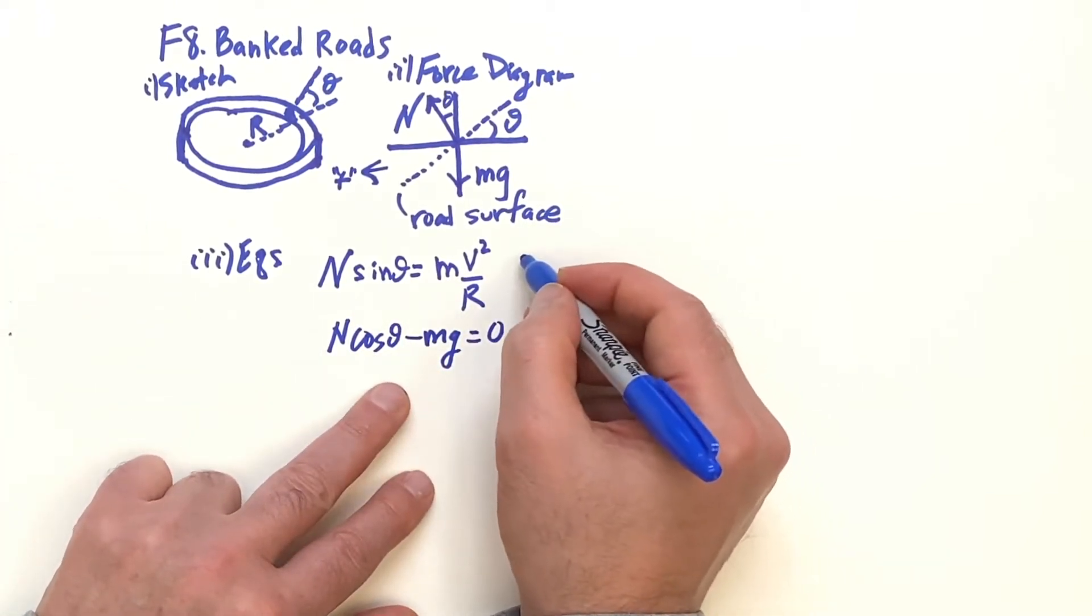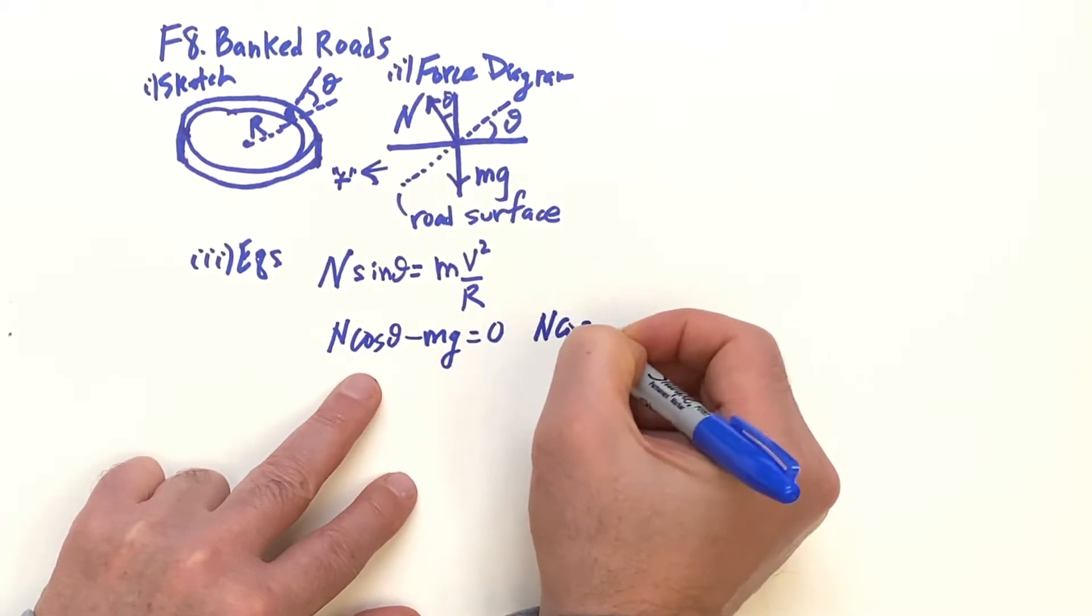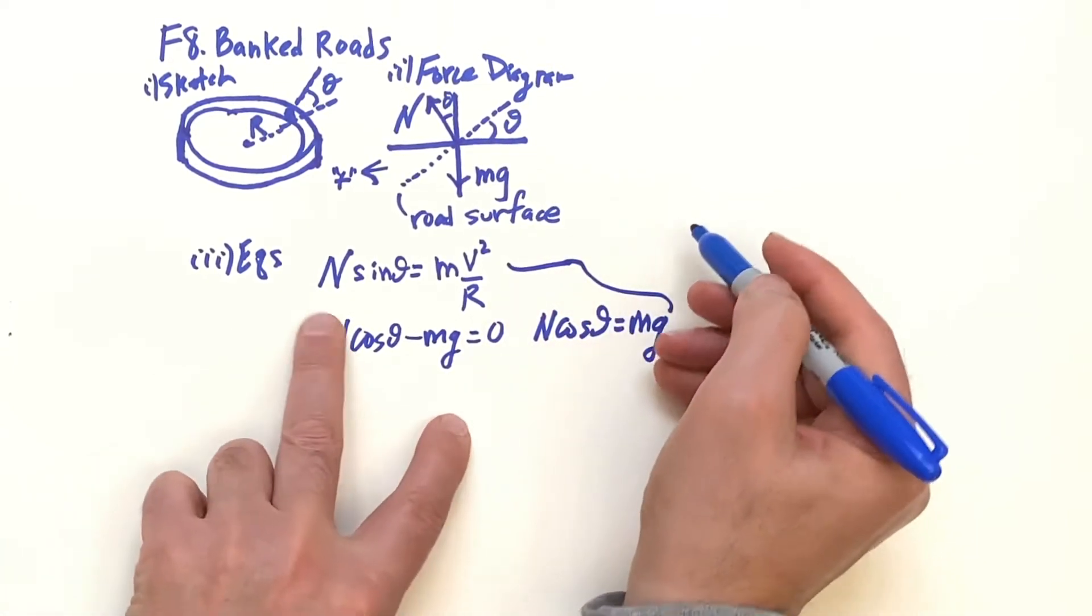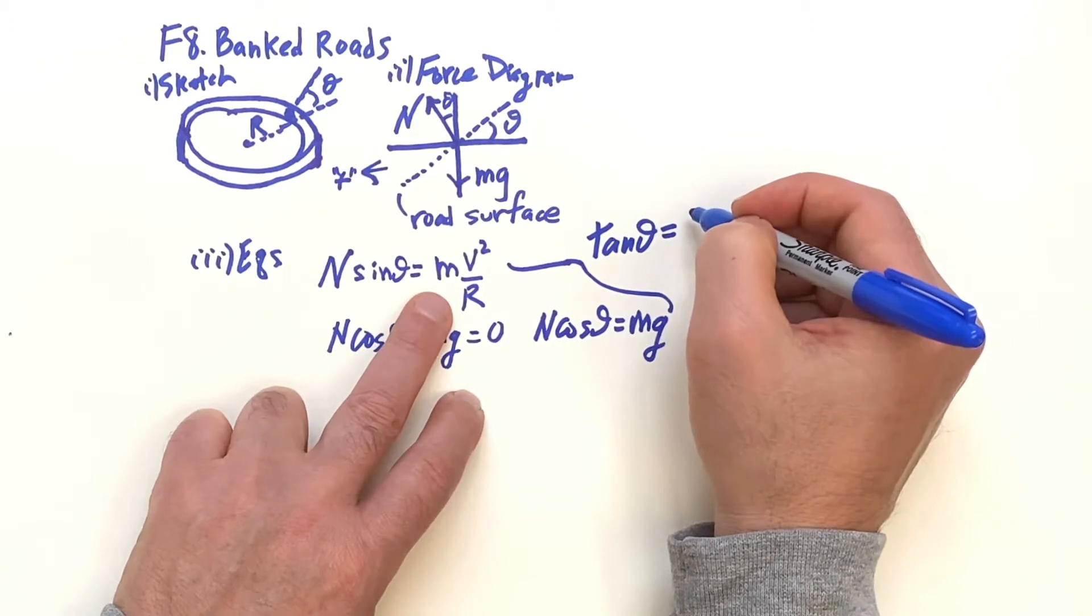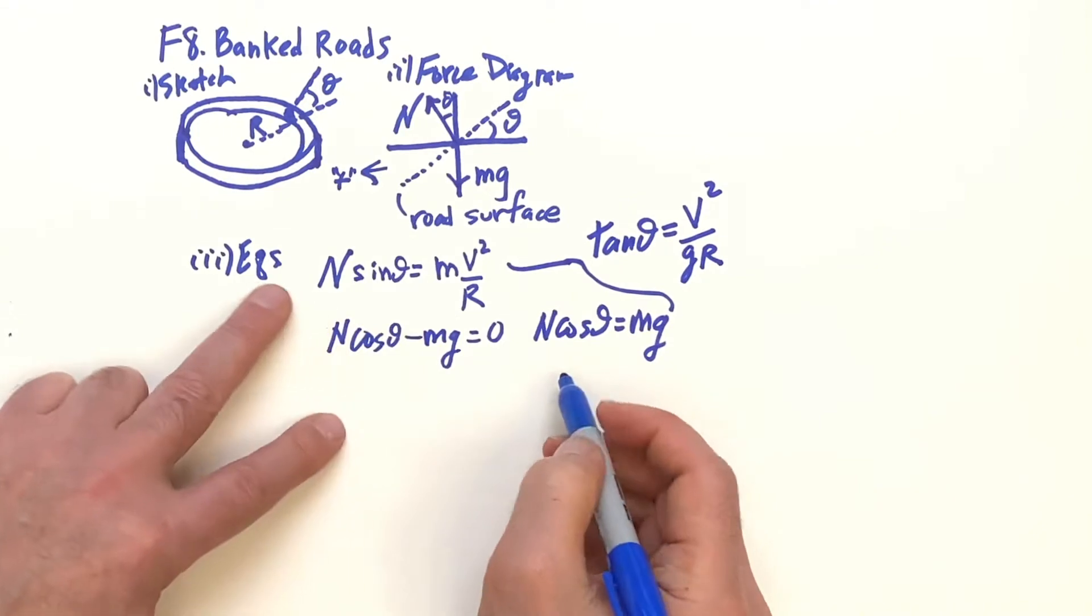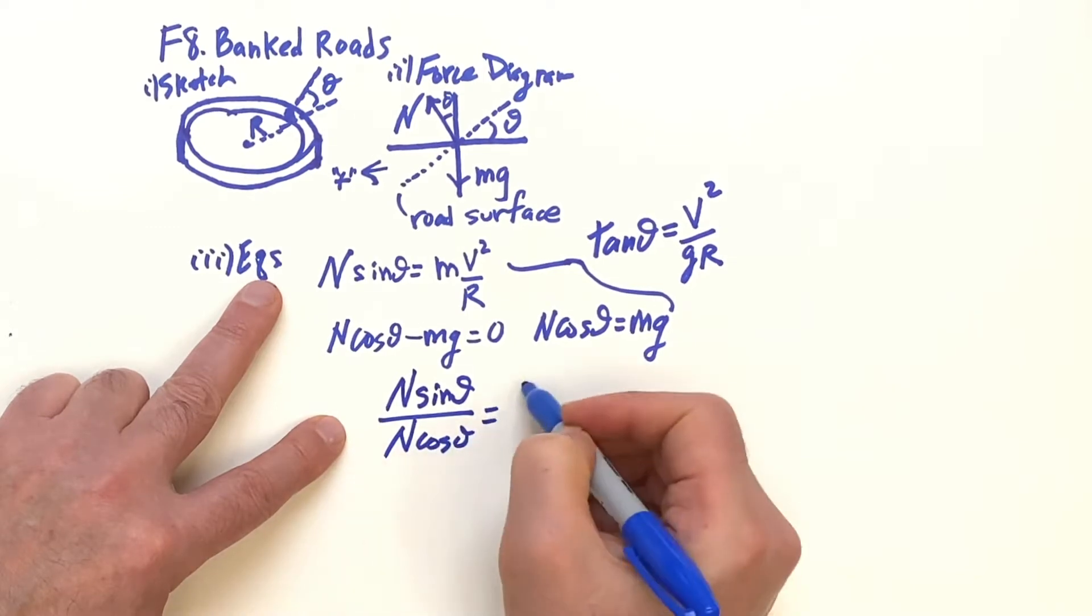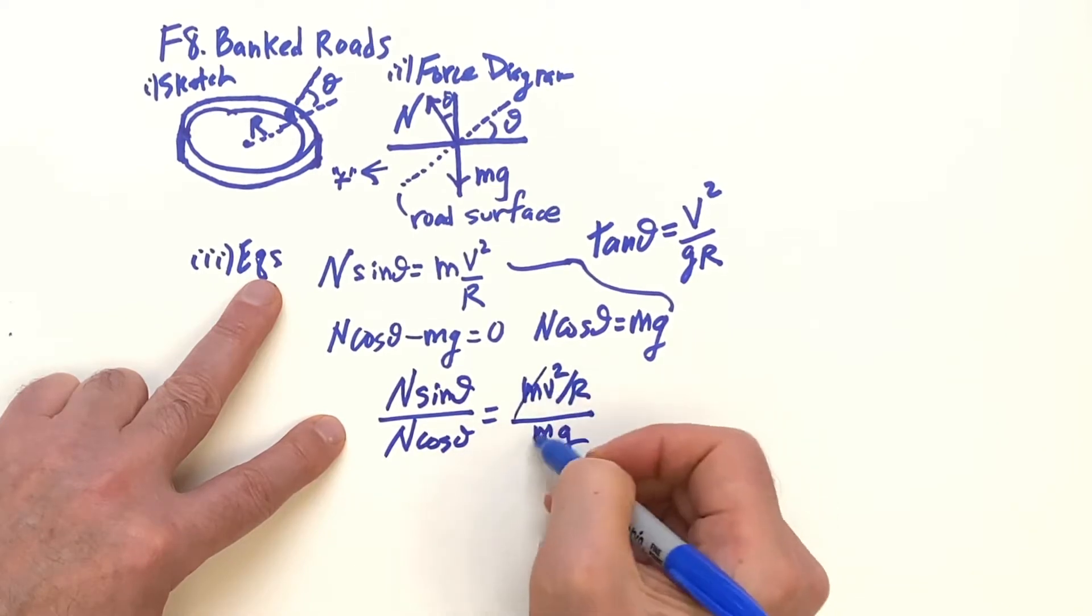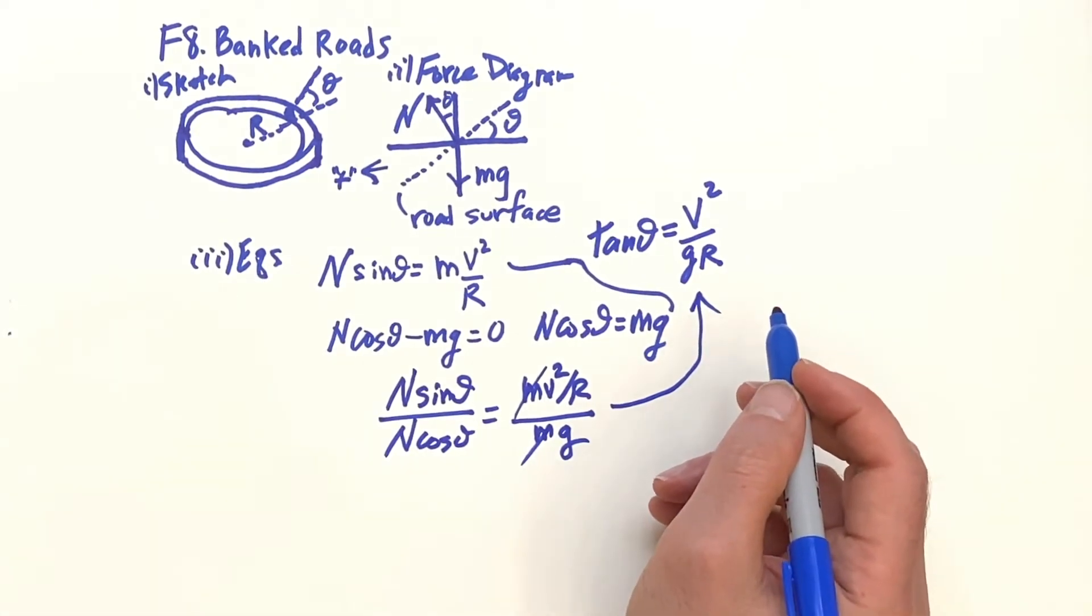So here we have two equations. The second equation can be written as n cosine theta equals mg. And now these two equations, we can divide those, and then we'll get the tangent of theta is equal to, the masses would cancel. We have v squared over gr. n sine of theta over n cosine theta, mv squared over r divided by mg. m's cancel, and you get that. So that's the situation.